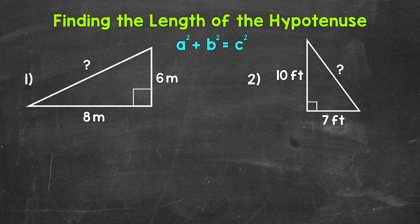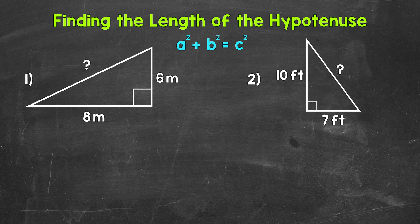If we know the lengths of two sides of a right triangle, we can use the Pythagorean theorem to find the length of the third side. Let's jump into our examples, starting with number one, where we have a right triangle and we are given the lengths of the legs. The hypotenuse is unknown. Remember, the hypotenuse is the longest side of a right triangle and the side across from or opposite of the right angle.